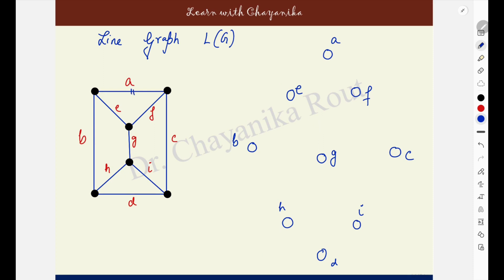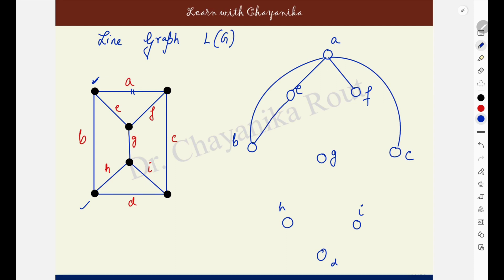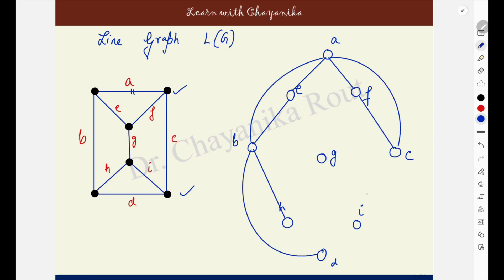Edge A is having these two end points shared with B, E, C and F. So A is adjacent to B, E, C and F. Then come to B. These are the two end points shared with A, E, D and H. B is adjacent to A — already done — make it adjacent to E, D and H. Then come to C. These are the end points shared with A, F, I and D. C is adjacent to A — make it adjacent to F, I and D.